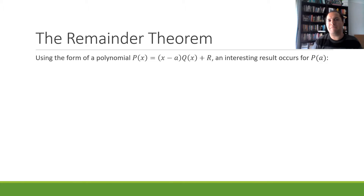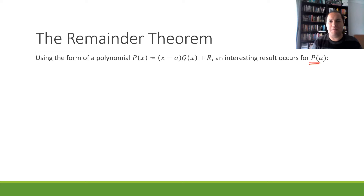The remainder theorem uses the idea that something interesting happens when we determine the value of p(a) — that is, when we substitute our a value into our polynomial.